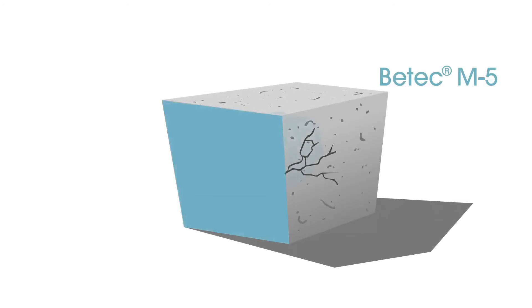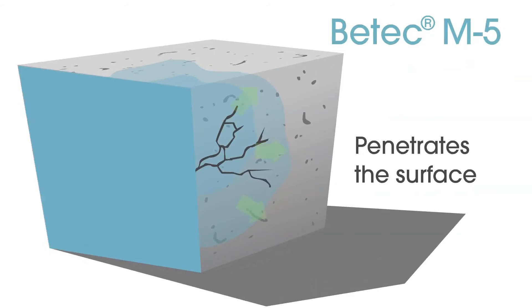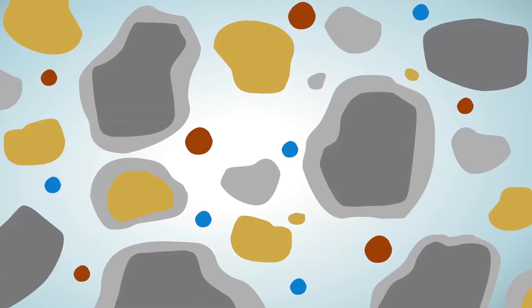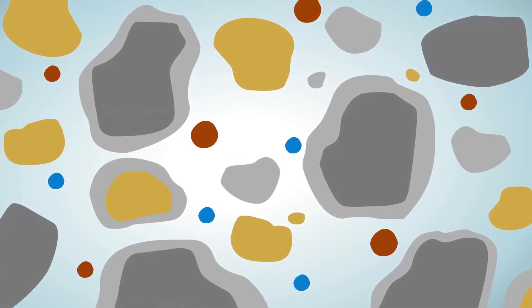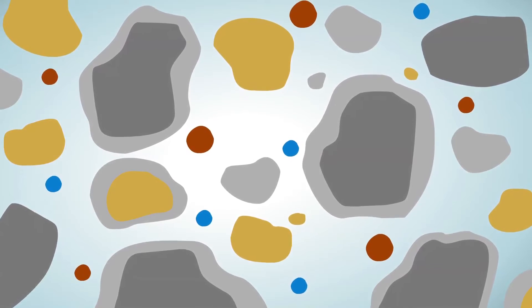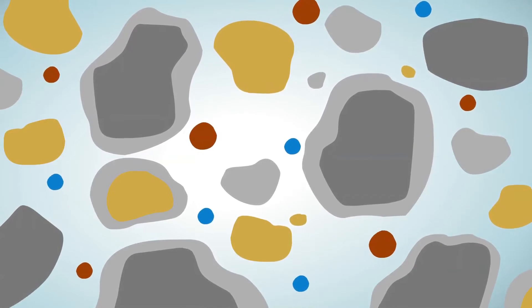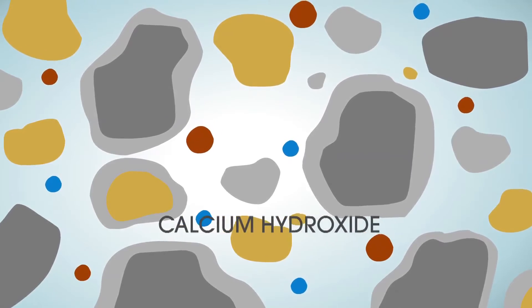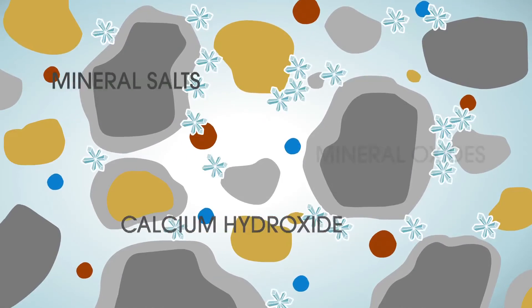When BTEC M5 is combined with water, its reactive chemicals diffuse into and travel through the concrete capillary tract system. This triggers a chemical reaction between BTEC M5, the moisture of water, the chemical by-products of cement hydration such as calcium hydroxide, mineral salts and mineral oxides.